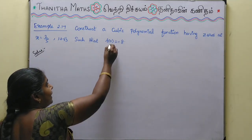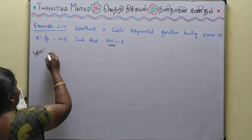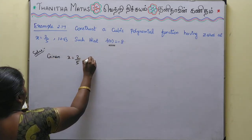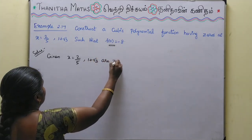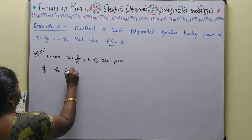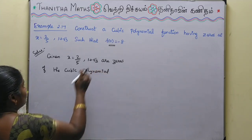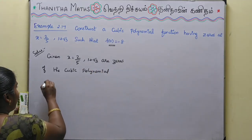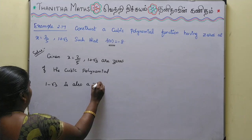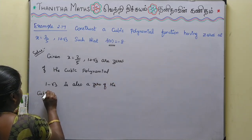The constant k will be determined using f(0) = -8. The zeros given are x = 2/5 and 1 + √3, and since 1 + √3 is a zero of the cubic polynomial, 1 - √3 is also a zero of the cubic polynomial.